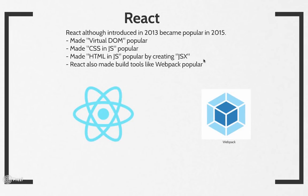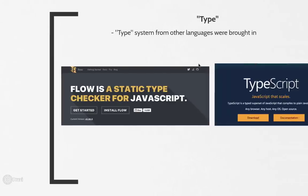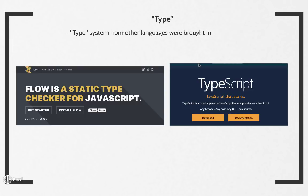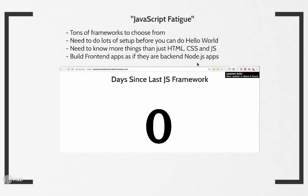That brings us to React. Although introduced in 2013, React really became popular in 2015. React popularized the idea of using a virtual DOM for performance reasons, and also made CSS-in-JavaScript and HTML-in-JavaScript popular. React also made build tools like Webpack popular. Around the same time, type systems were brought into JavaScript from other programming languages to help reduce errors like runtime errors. All these new technologies and new ways of building JavaScript applications have led to JavaScript fatigue.